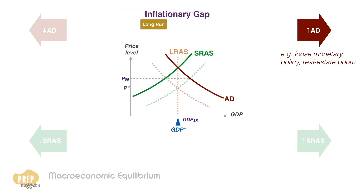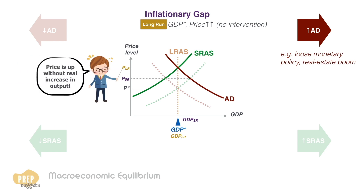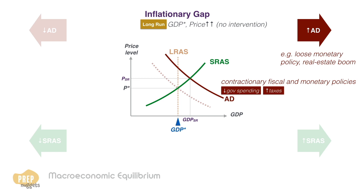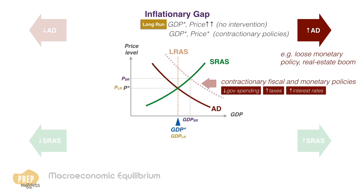So in the long run, the economy goes back to full employment GDP, but at a price level that is higher than before. This is undesirable as price levels go up without any increase in real output. If left unchecked, this can result in an inflationary loop where prices keep going up. To prevent this, policymakers should adopt contractionary fiscal and monetary policies by decreasing government spending, increasing taxes, or slowing the growth rate of the money supply through higher interest rates. This moves the economy back to the initial long-run equilibrium at full employment GDP without any increase in price.